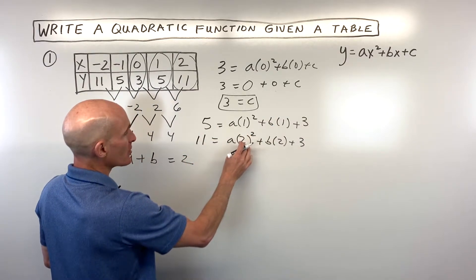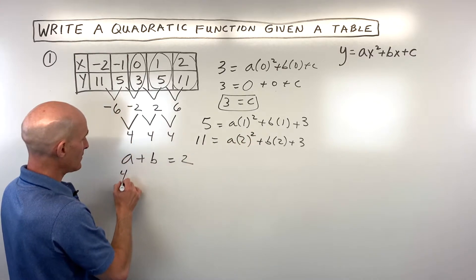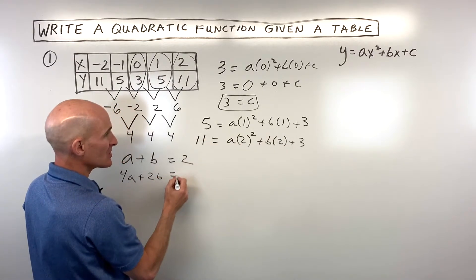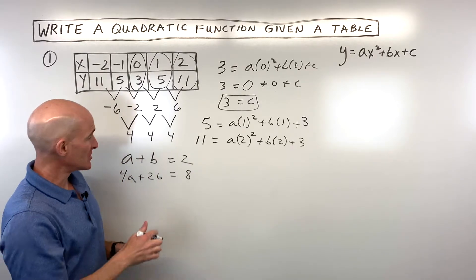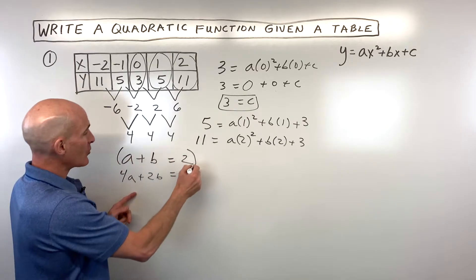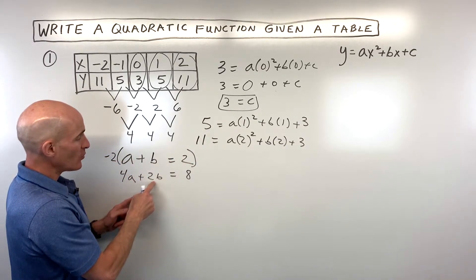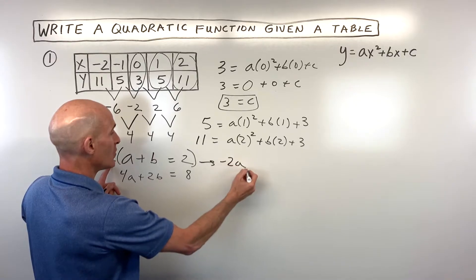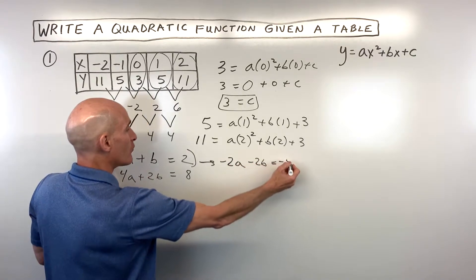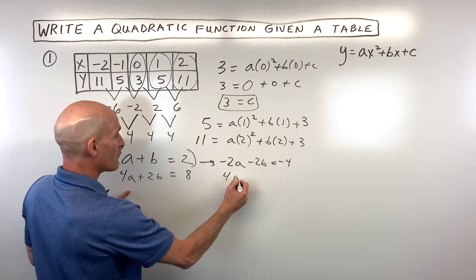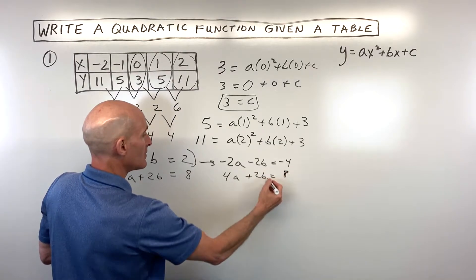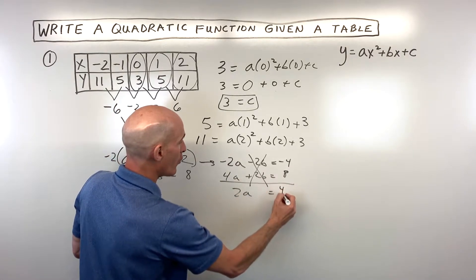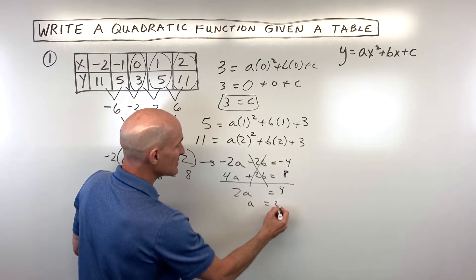For the second equation: 2 squared is 4 times a is 4a, and 2 times b is 2b, and subtracting 3 over gives 8. So 4a plus 2b equals 8. Now multiply the top equation by negative 2 to get negative 2a minus 2b equals negative 4. Adding to 4a plus 2b equals 8, the b's cancel and we get 2a equals 4, so a equals 2.